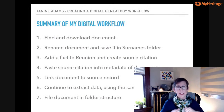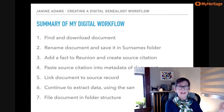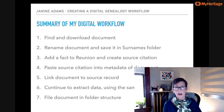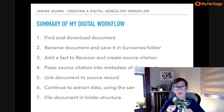Here are the seven steps. Step 1: I find a document online and download it. Step 2: I immediately rename it and save it to a folder on my hard drive called Surnames. Step 3: I add a fact from the document into my Reunion database and create a source citation. Step 4: I paste the source citation into the metadata of the document. Step 5: I link the document into the multimedia section of the source record in Reunion. Step 6: I go back and find all interesting information, adding data in Reunion. Step 7: I file the document in my folder structure.